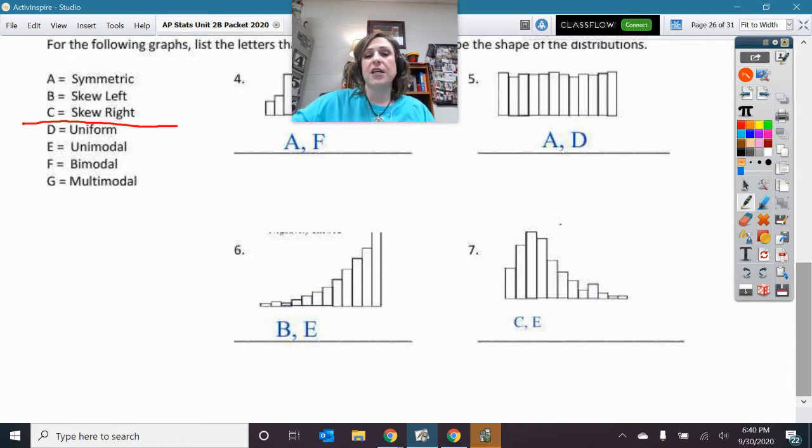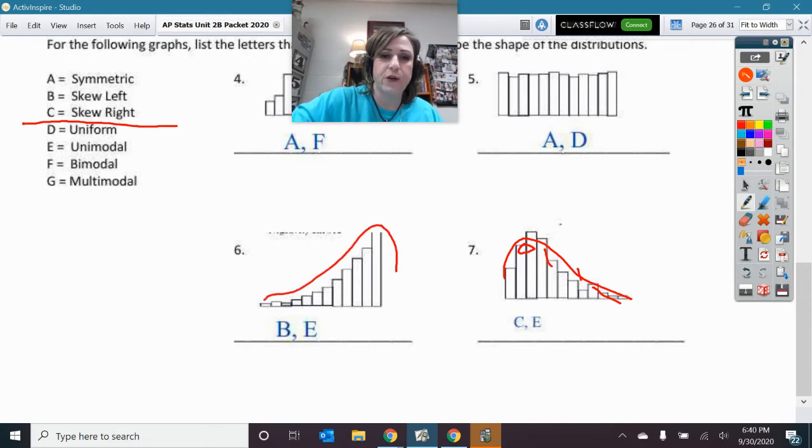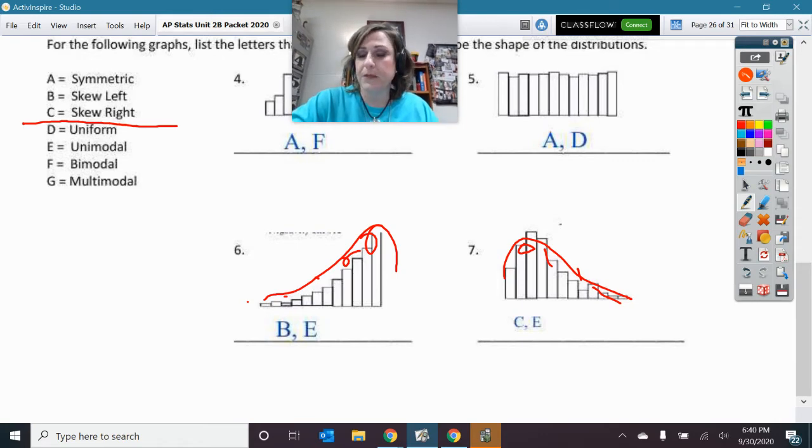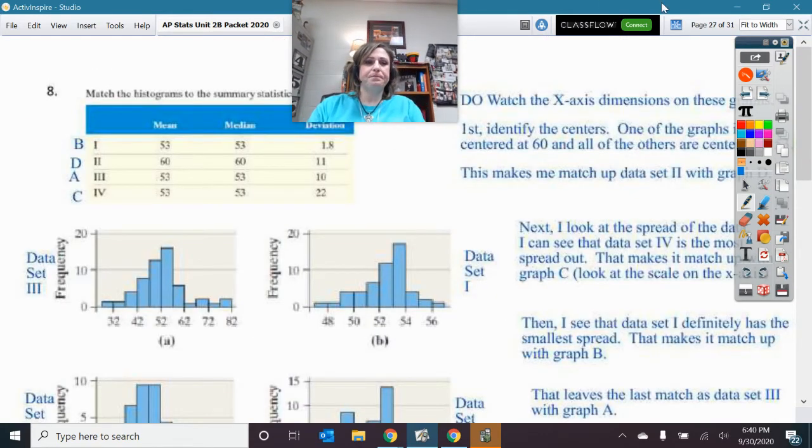And so number six is skewed left and unimodal. Seven is skewed right. Because remember, this is like your right foot, your big toe, and then down to your pinky toes. This is your left foot. So you're looking down at your foot. That's how those are shaped. All right. Next. Okay. So let's take a look at this. Match the histogram to the pieces of data.